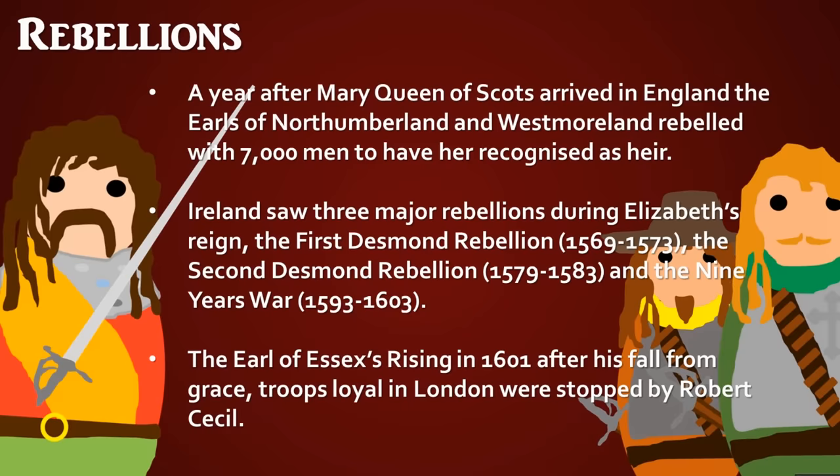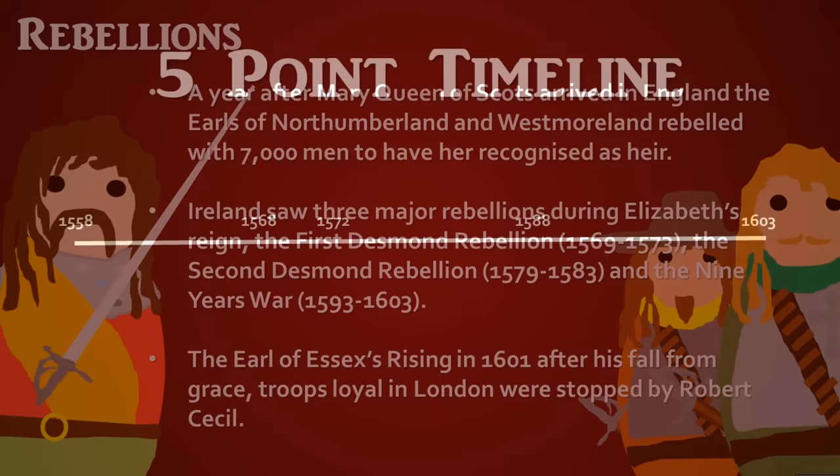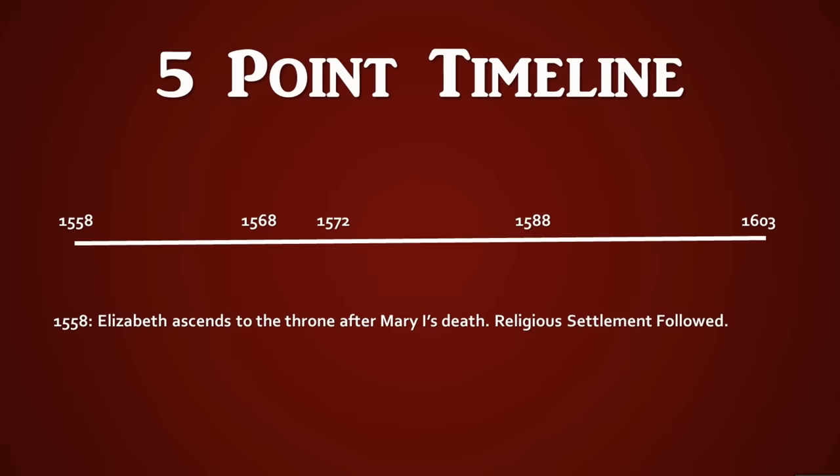The Earl of Essex's rising in 1601 came after his fall from grace when the Queen threatened to remove his monopoly on sweet wines, which would have bankrupted him. Troops loyal to him were in London, but Robert Cecil had informants in his household, uncovered the plans, and sent troops to stop the rebellion, followed by Essex's execution. Elizabeth herself died two years later, in 1603.